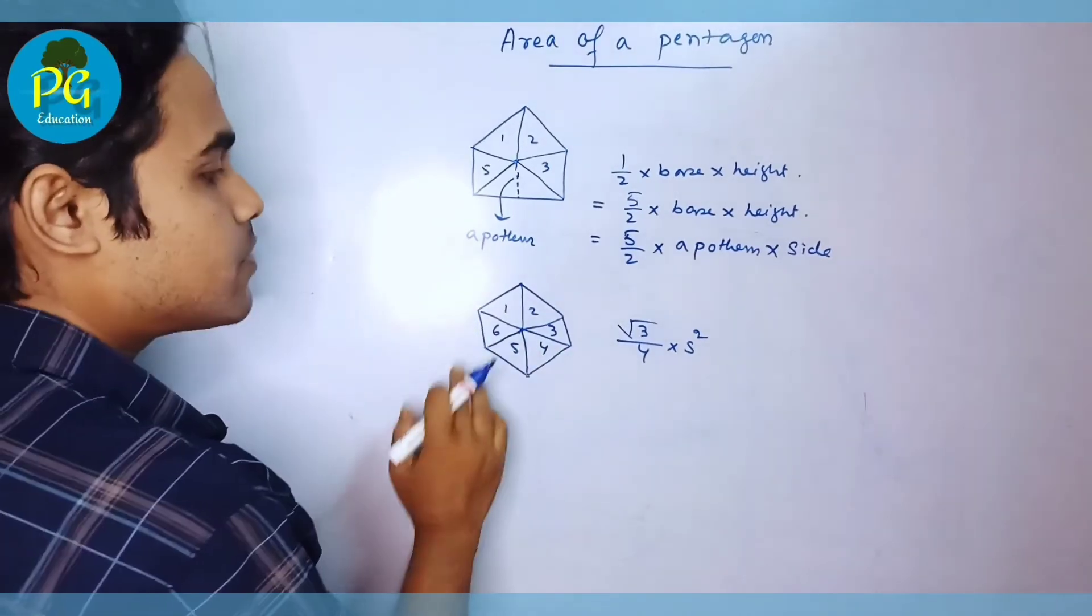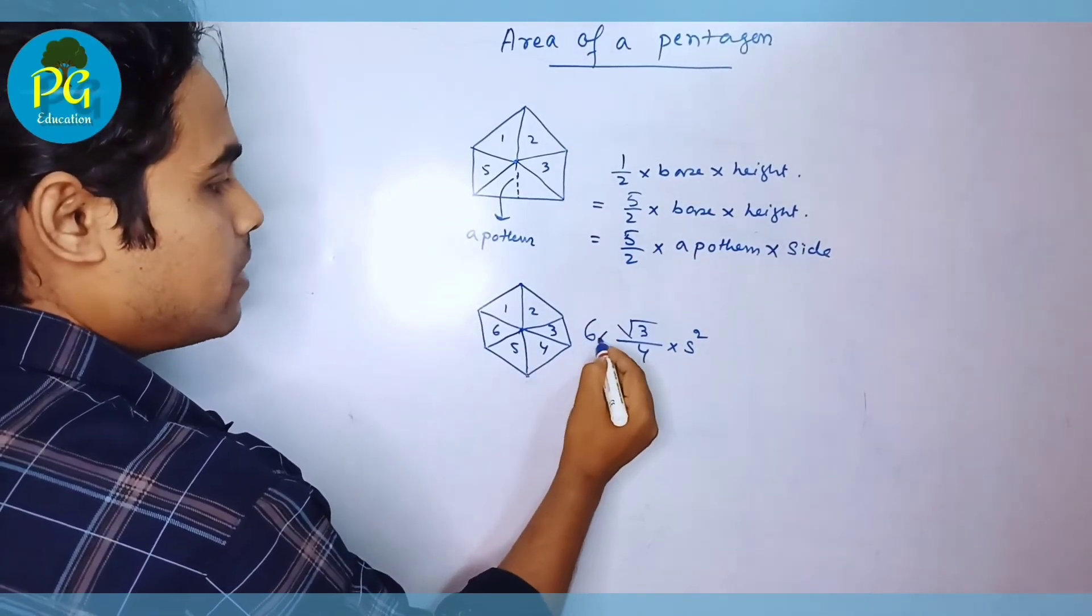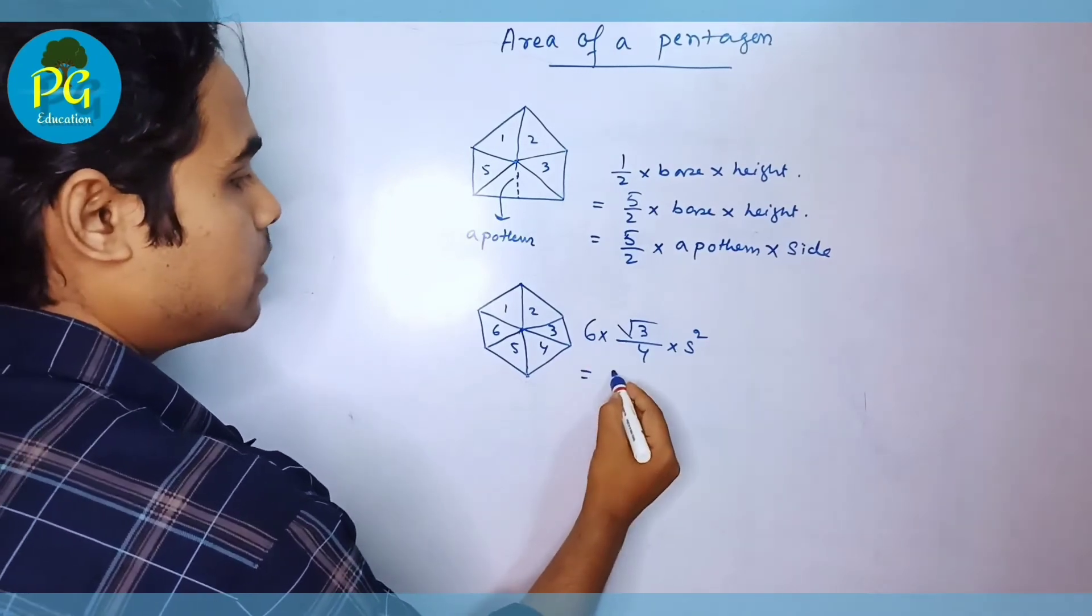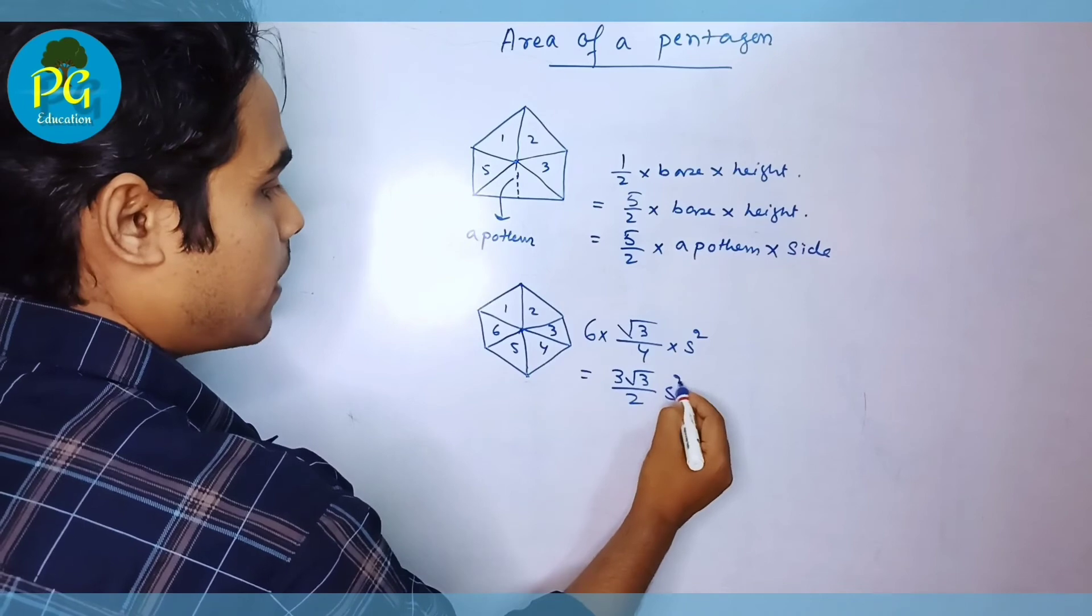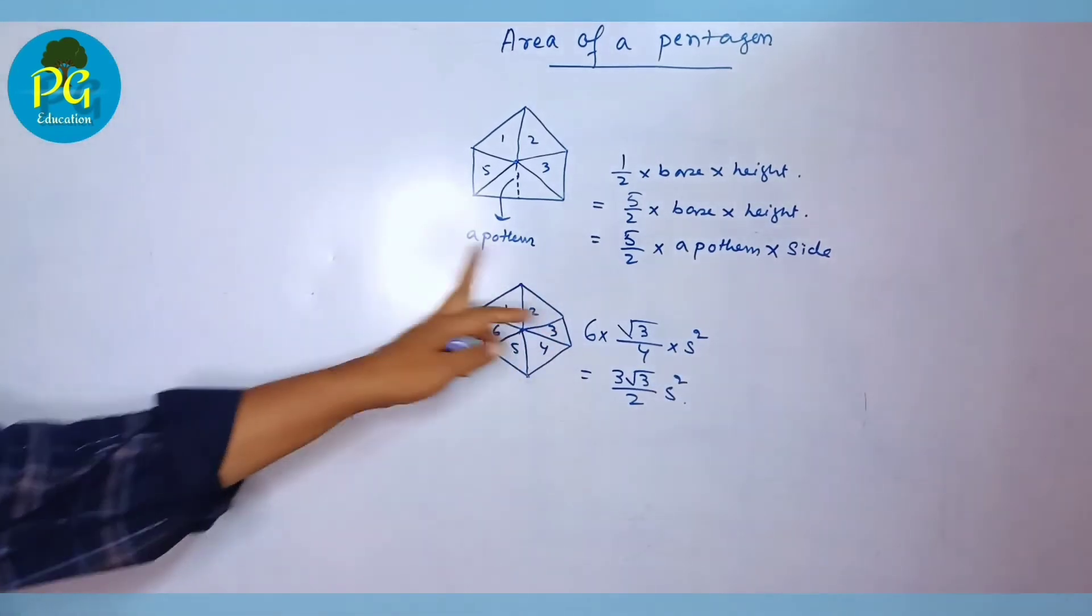How many triangles are there? Six triangles. So we have to multiply with six. So this is equal to three root three by two into side square is the area of this hexagon.